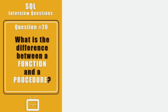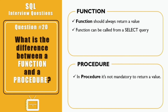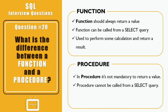Question twenty: what is the difference between a function and a procedure? A function should always return a value, whereas for a procedure it is not mandatory to return a value. A function can be called from a SELECT query, whereas a procedure cannot. A function is generally used to perform some calculation and return a result, whereas a procedure is generally used to implement some business logic.